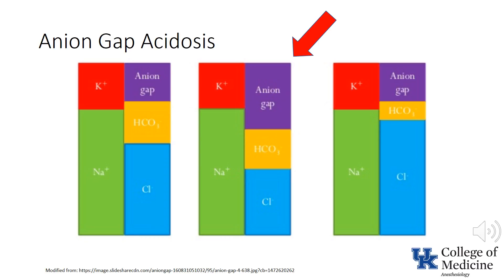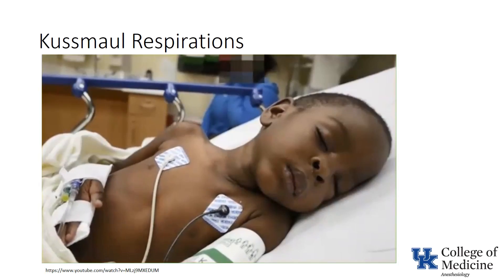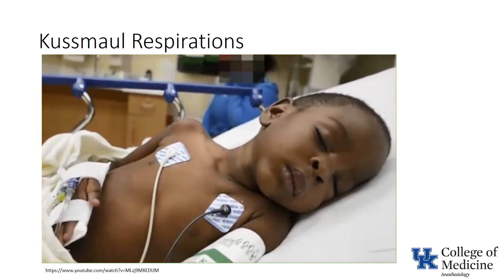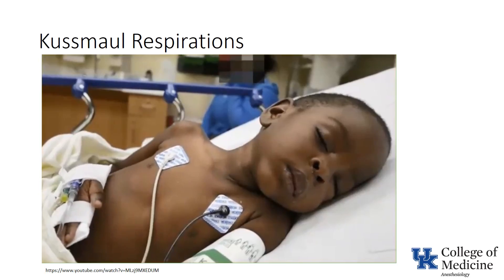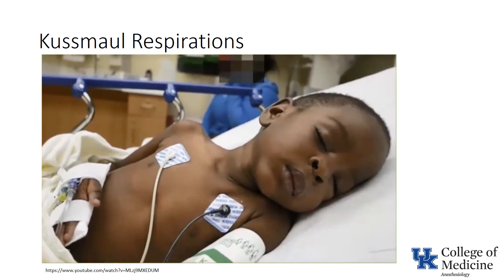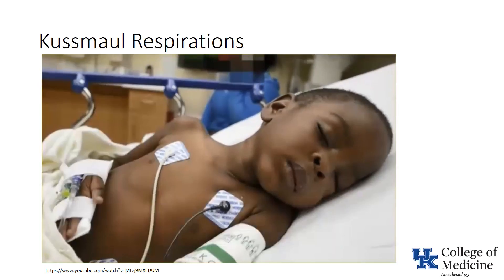Patients with DKA also commonly are hypotensive and tachycardic, with some form of spontaneous hyperventilation. Kussmaul breathing consists of tachypnea with large tidal volumes and is associated with a metabolic acidosis. Diabetic ketoacidosis is one of the most common causes of Kussmaul breathing.